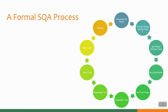This cycle describes the formal SQA process, which starts with the development phase. Then the pre-QA phase comes, then QA phase for a smoke test, then bug submission, then retest phase, then integration test, regression test, alpha test, beta test, and finally release comes.